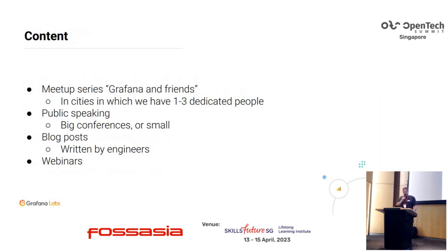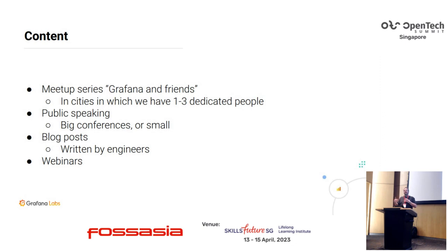Other things we like to apply: we have a meetup series called Grafana and Friends in various cities around the world. It's always in cities where we have one, two, or three dedicated people who are committed to running it long-term. We help them with finding venues, getting pizza money, getting speakers, maybe paying for a speaker to travel to speak at the meetup. Things like these keep local communities healthy, and that's why we as Grafana Labs do this.